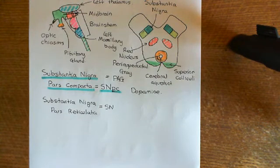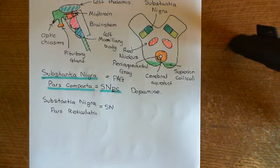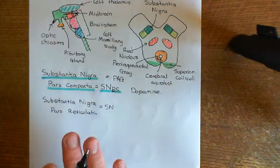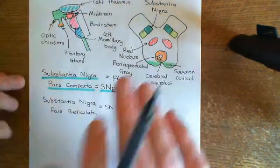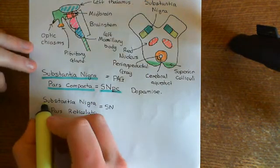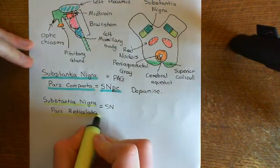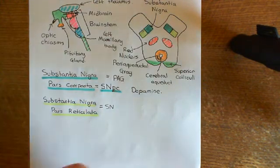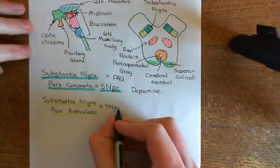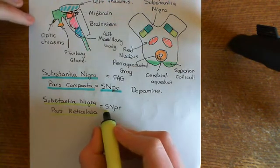Welcome back to this next video in which we are discussing Parkinson's disease and anti-Parkinson drugs. We're in the process of discussing the anatomy of the basal ganglia. So far we've seen the substantia nigra pars compacta. Now we're about to see the other area of the substantia nigra, which is the substantia nigra pars reticulata, the more lateral area of the substantia nigra, shown here in yellow. The substantia nigra pars reticulata is abbreviated to SNPR.